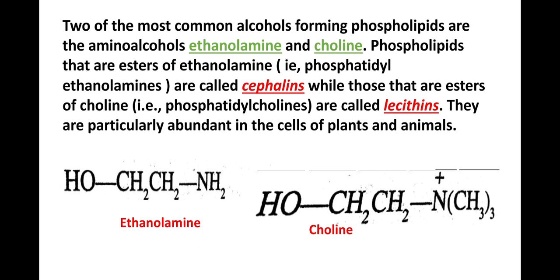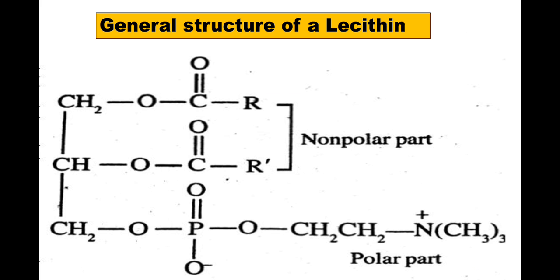Here the formula of ethanolamine is given, you can see it, and choline is also given. The general structure of lecithins shows CH₂-CH₂-N⁺(CH₃)₃ as the polar part — it is the head position — and the tail position is the non-polar part.